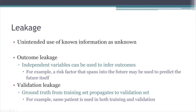A key consideration is data leakage — whether information that's known in some way gets presented as an unknown. For example, whether outcomes or various independent variables like a risk factor are used to predict the future itself, or where ground truth information from the training set propagates into the validation set so that the same information is used for both training and testing. All of these things we have to look out for and address.